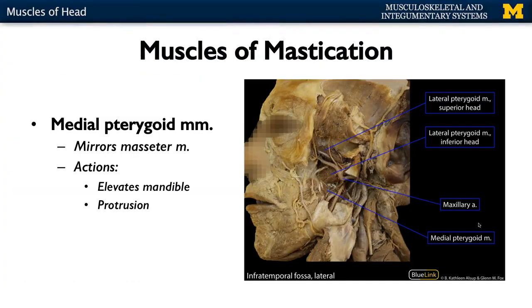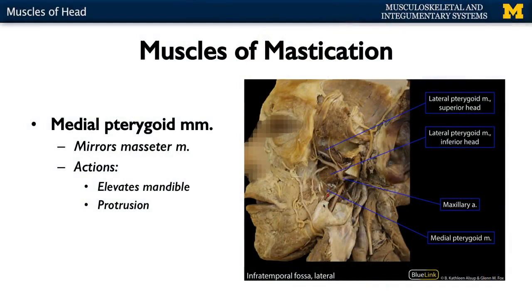Lastly, you have your medial pterygoid. This is basically a mirror image of your masseter — whereas the masseter is on the lateral side of the ramus of the mandible, the medial pterygoid is on the opposite side of the ramus of the mandible. Similar to the other muscles of mastication — other than the lateral pterygoid — it plays a big role in elevation of the mandible.